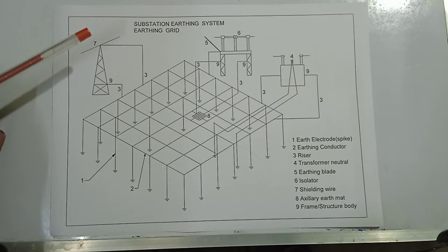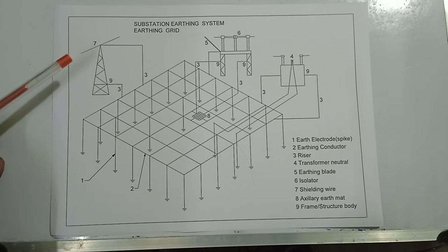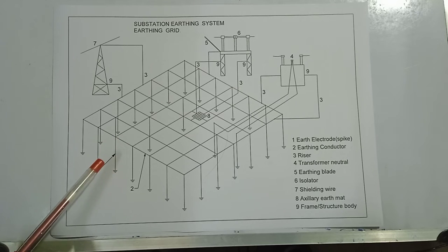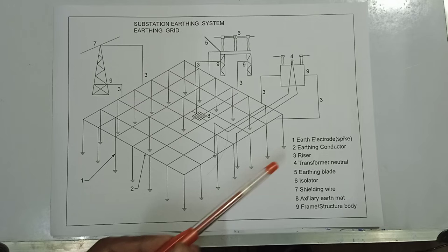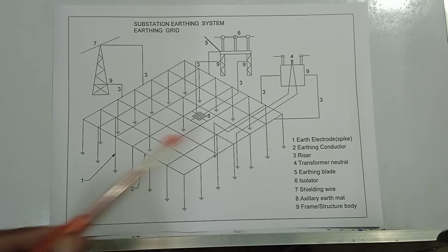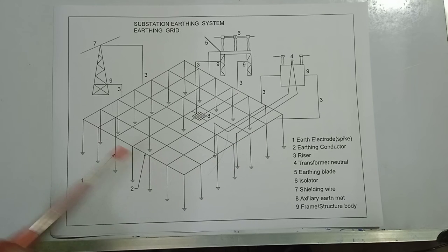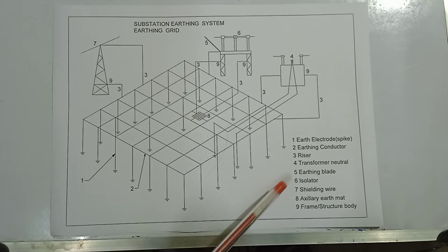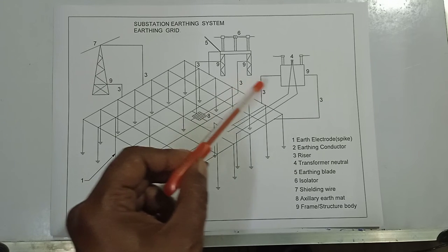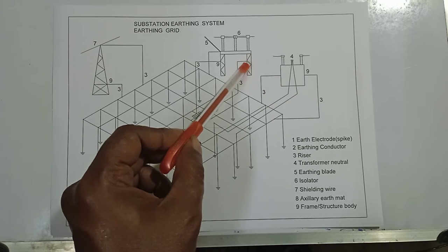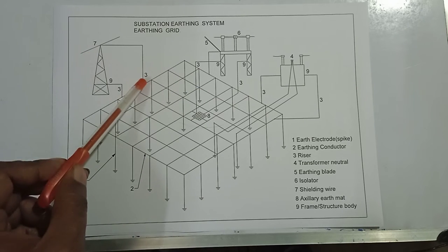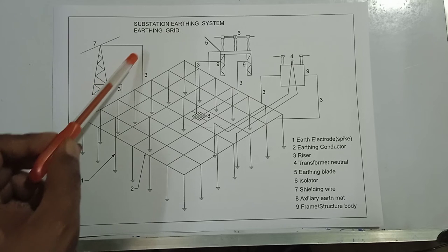Here is the substation earthing system earthing grid diagram. The first component is the earth electrode spike, vertically buried in the ground. The second is the earthing conductor — the grid is made of horizontal conductors in the X and Y axis. The third is the riser, which connects the earthed tank and isolated structures from the grid. One riser is connected to the tower and another to the earth shield.